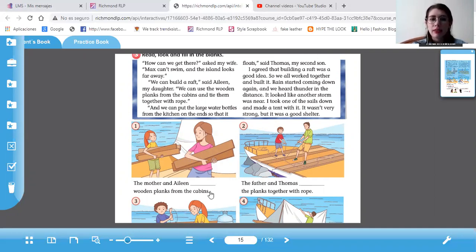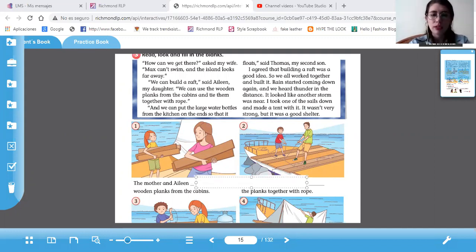Primero dice, the mother and Aileen wooden planks from the cabins. ¿Qué dice sobre Aileen en el texto? We can use the wooden planks from the cabins. El verbo es use, pero lo vamos a escribir en pasado. Usaron. The mother and Aileen used wooden planks for the cabins.